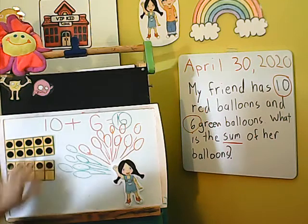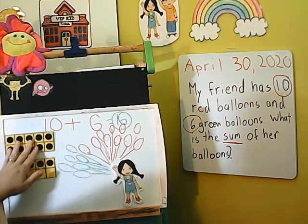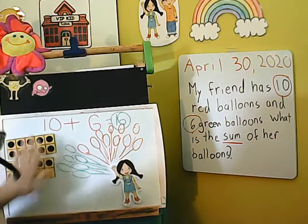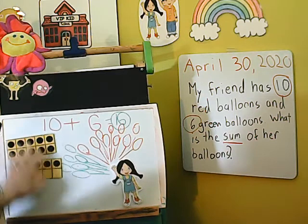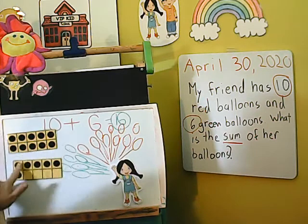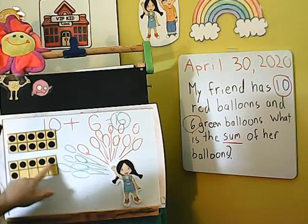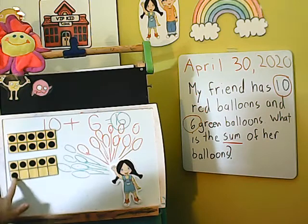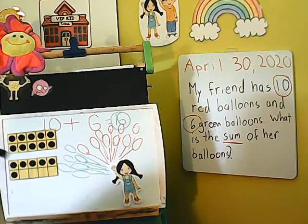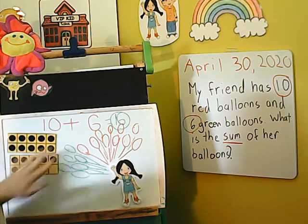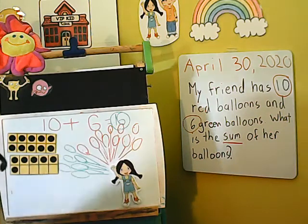You could also count on from the ten: ten, eleven, twelve, thirteen, fourteen, fifteen, sixteen. That's another way I could solve it fairly quickly to get the same answer — sixteen.